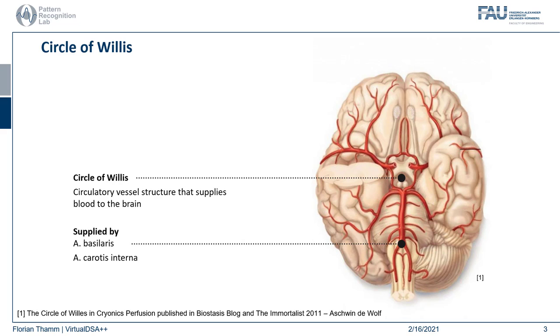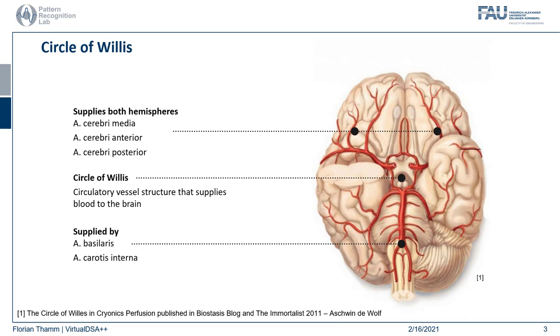The circle of Willis is very well visible if we look at the brainstem. It is a ring-shaped vessel structure which receives blood through the basilaris and the carotis interna. The job of the circle of Willis is to distribute that blood onto the cerebral arteries, namely cerebri media, anterior and posterior.